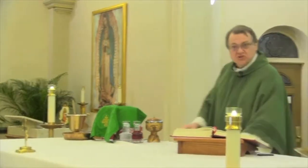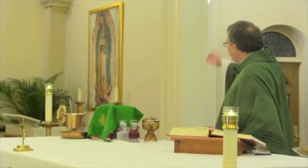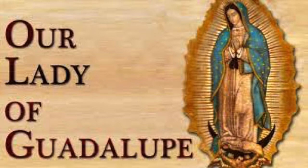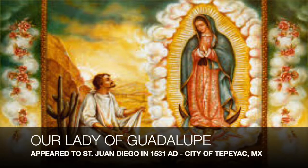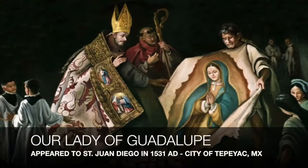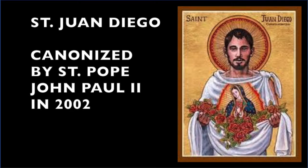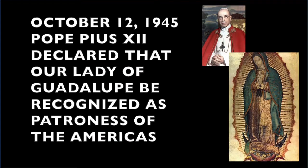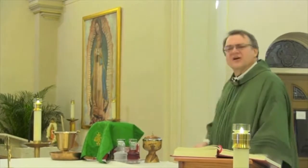In most churches in North and South America you can find an image of what we call Our Lady of Guadalupe. In 1531, our Blessed Mother appeared in the city of Teotihuacan in Mexico to a man we have honored as Saint Juan Diego. She appeared to Juan Diego as the patroness of the Americas, as told to us by Pope Pius XII. She is the patroness of North, Central, and South America, and so it's very appropriate to have an image of Our Lady of Guadalupe in the churches in this part of the world.